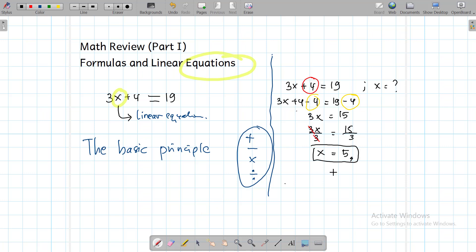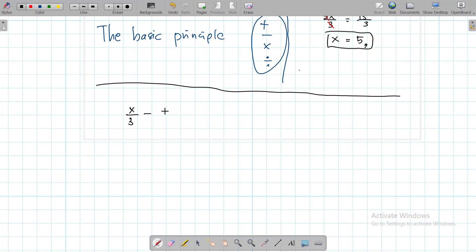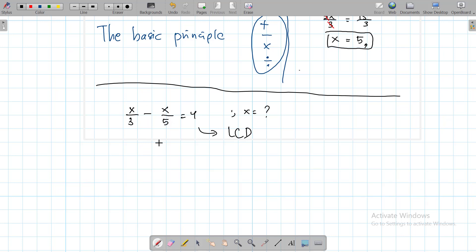Easy. Okay, and how about fractional equations? For example, I have x divided by 3 minus x divided by 5 equals 4. What is x? It's very easy. First thing first, we have to find the least common denominator of all fractions in the equation.